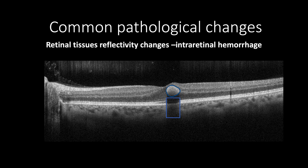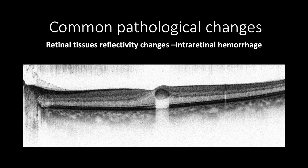In contrast, in negative black and white, the intraretinal hemorrhage will appear as a homogeneous black color with smooth regular borders casting white shadow hindering the underlying retinal tissue.